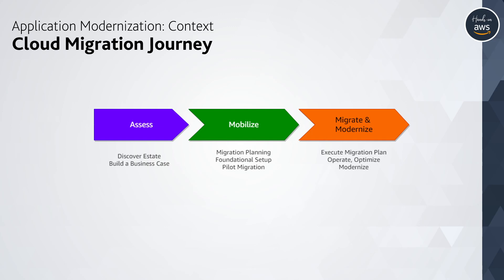The first phase, Assess, is concerned primarily with discovering the inventory in scope for the migration and building a business case for the stakeholders to understand the value of moving into the cloud. Once there is buy-in to move forward, the second phase, Mobilize, dives into a detailed application portfolio analysis and migration planning. We also lay the foundations for the cloud footprint of the migrated workloads. A landing zone is established, and the security and governance controls, the operational model, and enablement of people capabilities needed to operate it, are set in motion.